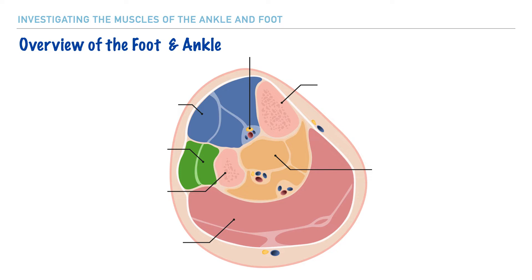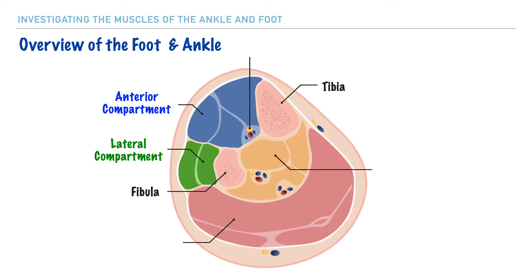But before we identify them, let's first identify the skeletal components to help us in knowing where we are. First, we have the tibia, and here we have the fibula. So now that we've identified those, let's label the compartments. We have an anterior compartment, a lateral compartment, and a posterior compartment. This posterior compartment has two divisions: the superficial posterior compartment and the deep posterior compartment.